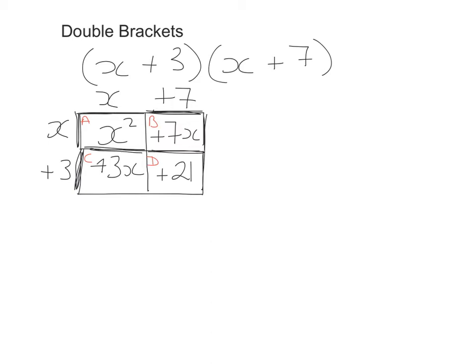Therefore, to get my answer, all I'm going to do is write out what all the areas are. So it's x squared plus 7x plus 3x plus 21. Therefore, my answer is going to be x squared plus 10x plus 21. That's using the array method to multiply out those two brackets.